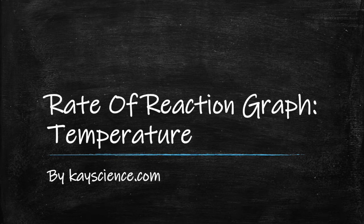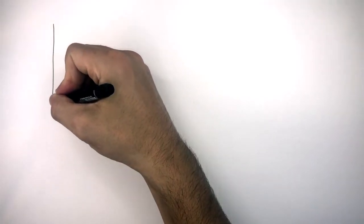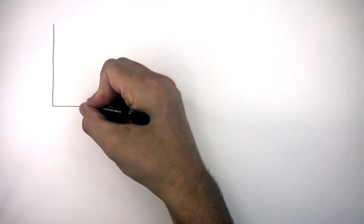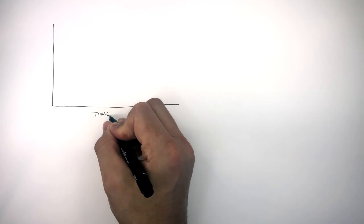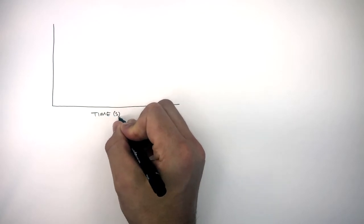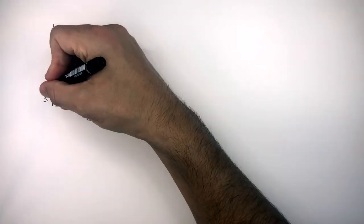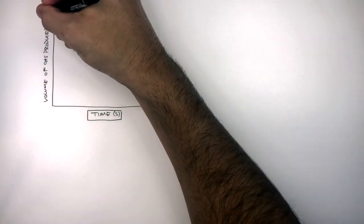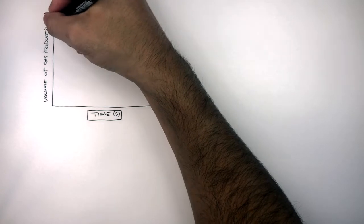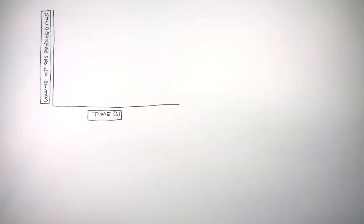Rate of Reaction Graph: Temperature, by kscience.com. Here I'm drawing a graph where on the x-axis is time in seconds and on the y-axis is volume of gas produced in centimeters cubed. We're going to learn how to interpret a rate of reaction graph where the variable is temperature.